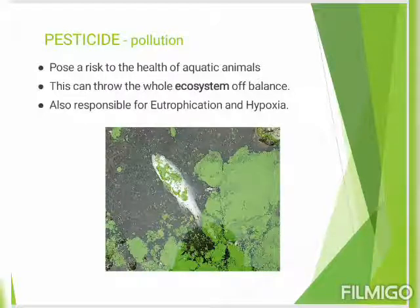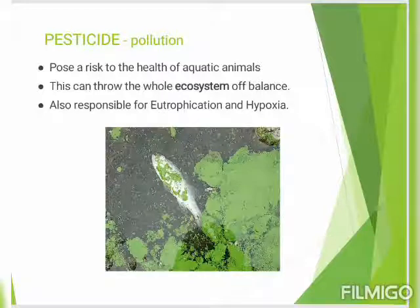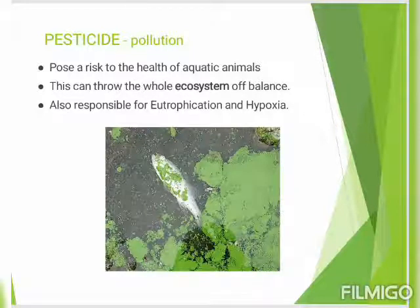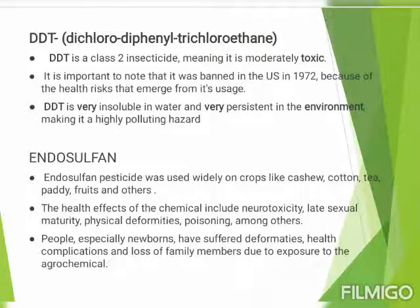The environmental impacts of indiscriminate pesticide use include harm from herbicides used to get rid of weeds, insecticides, fungicides, nematicides, and rodenticides. DDT is a class 2 insecticide, meaning it is moderately toxic. It was banned in the US because of health risks that emerged from its usage.